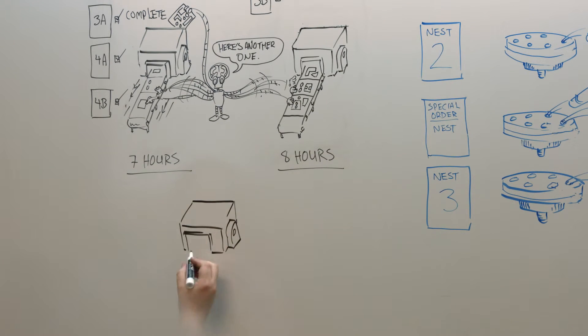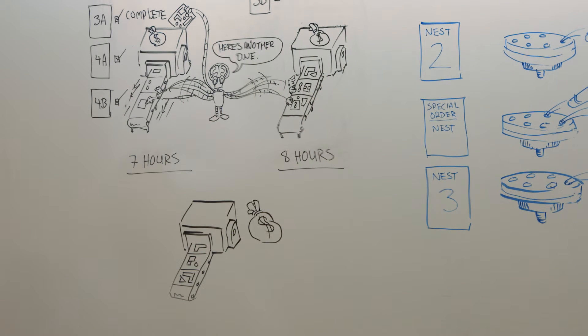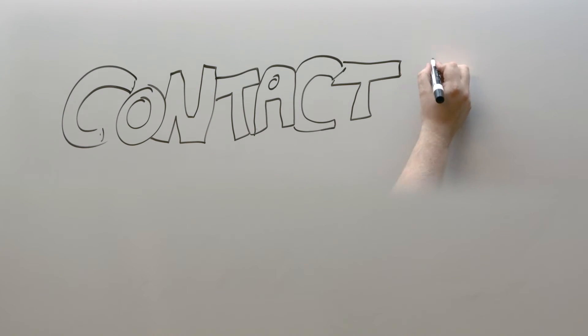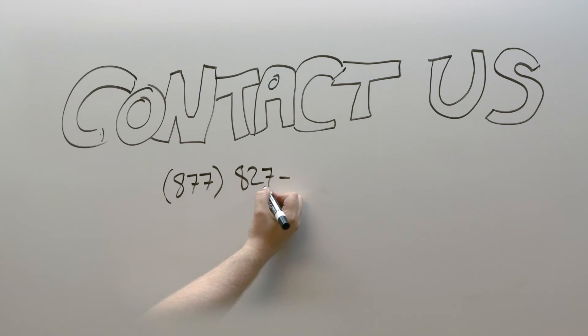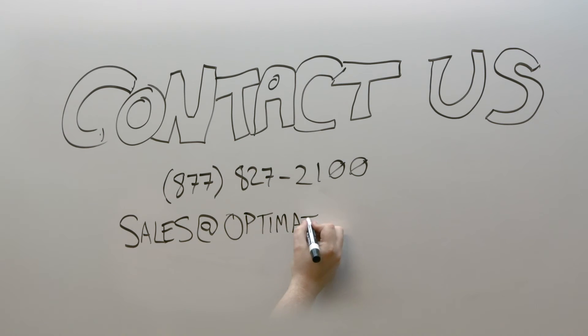Automatic just-in-time nesting saves labor and materials with every machine you have. The more machines you have, the more you are going to save. For more information on how the just-in-time nesting system can revolutionize your manufacturing process, you can contact us directly at 877-827-2100.